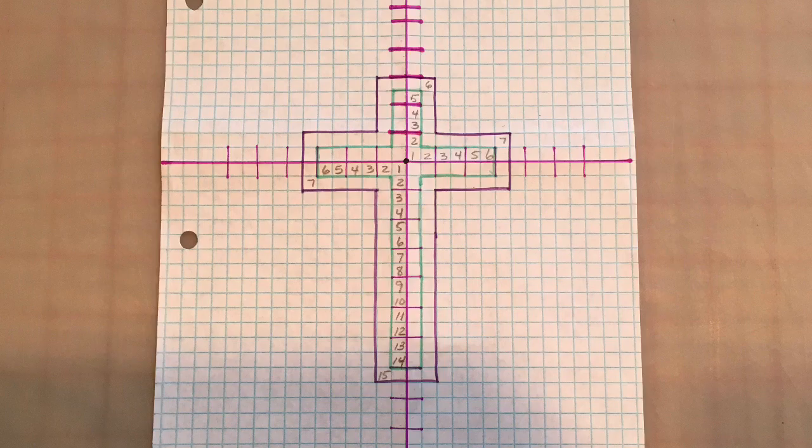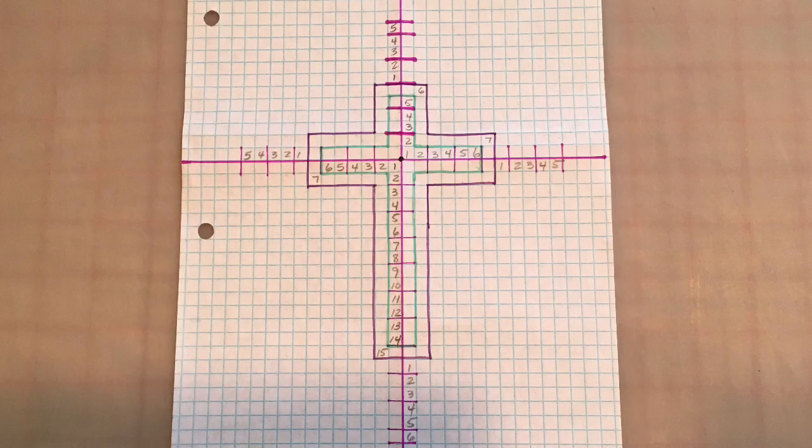Now you're going to have an outline, a single line all the way around for the dark part of the cross. The dark outline is going to be a single one out. So that's going to be six to the top and seven out to each side and fifteen down to the bottom. And then go ahead and do an outline of that again. I have that in purple.